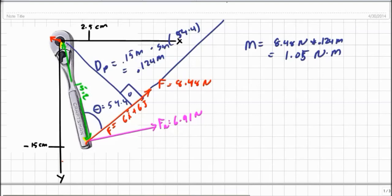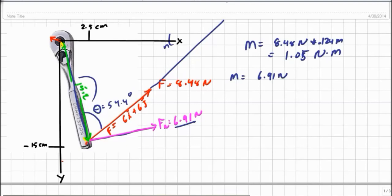Another way I could do this, rather than finding this perpendicular distance, I can take the component of the force that's perpendicular to whatever axis I have handy. And we had previously calculated that perpendicular component of the force being equal to 6.91 newtons. And I have my length here of 15.2 centimeters. So I can calculate moment equals 6.91 newtons times 0.152 meters. And that comes out to, surprise surprise, 1.05 newton meters.